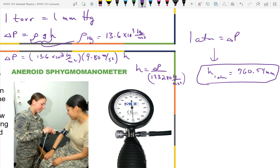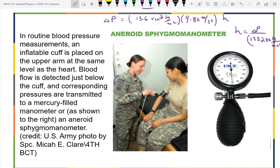The downside of mercury is that it's toxic. When we moved into this building, students moving a barometer spilled mercury and we spent over $200,000 remediating the leak — even though by the time they came in to do the work two months later, there was no mercury left. Government regulations required the cleanup. After that, I had to get rid of all my mercury thermometers and barometers.